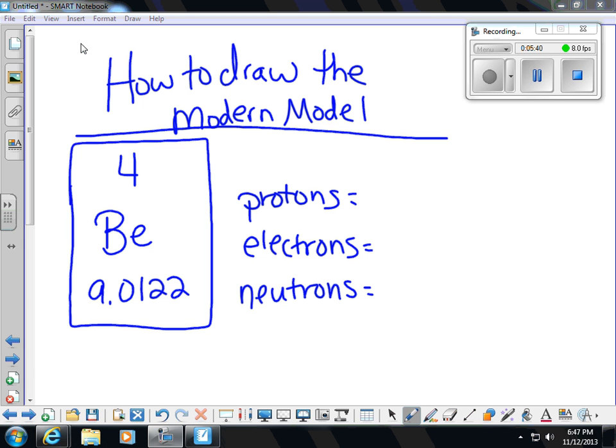Protons, we look at the atomic number. That gives us the number of protons. For electrons, we look at the number of protons. It's equal to that. For neutrons, we take the mass minus the atomic number.